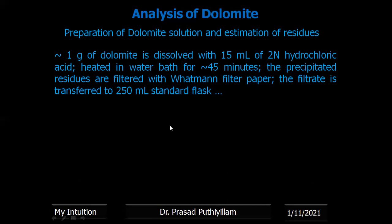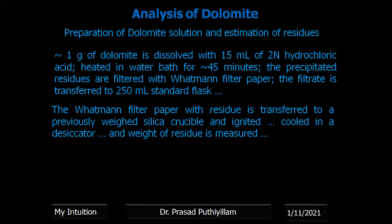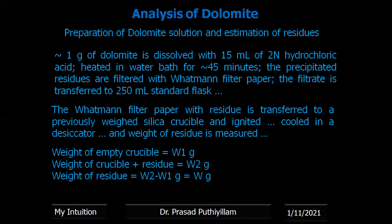For the Whatman filter paper containing the residue: the filter paper is transferred to a previously weighed dry silica crucible. The residues along with the Whatman filter paper are ignited, then cooled in a desiccator, and the weight of the residue is measured. Weight of empty crucible = W₁ g; weight of crucible plus residue = W₂ g; weight of residue = W₂ − W₁ = W g. Percentage of residue = (W / weight of dolomite) × 100.